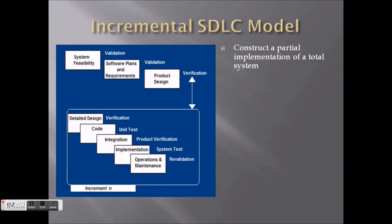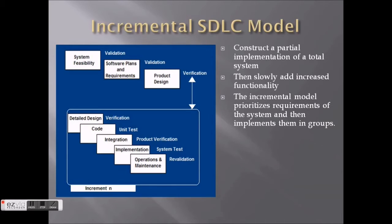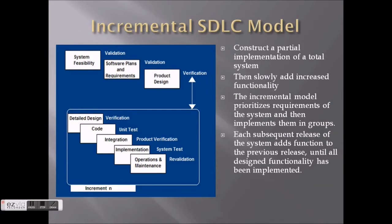The incremental model slowly adds increased functionality over time. It prioritizes system requirements and implements them in groups. The user may require certain functionality in the first version or prototype, and optional functionality can be added later. Each subsequent release adds more functionality than the previous one until the design is fully implemented.